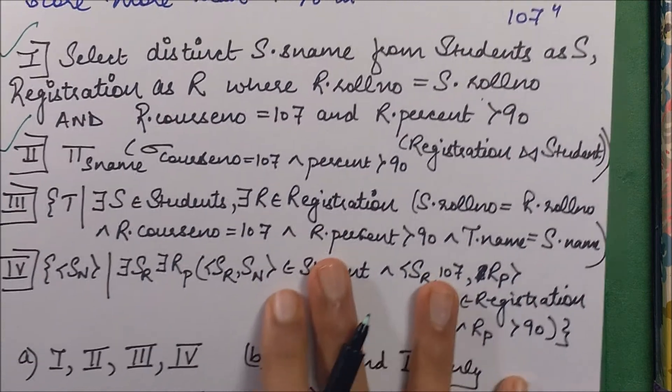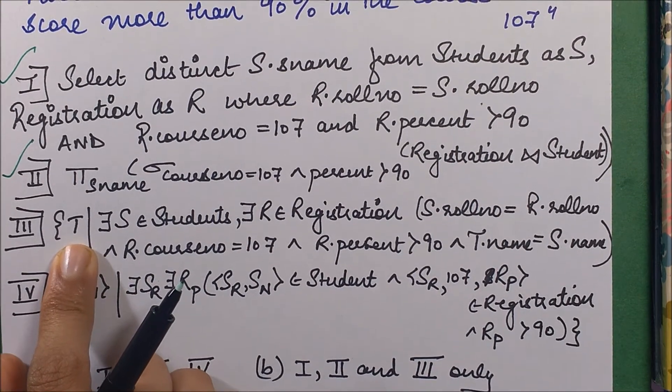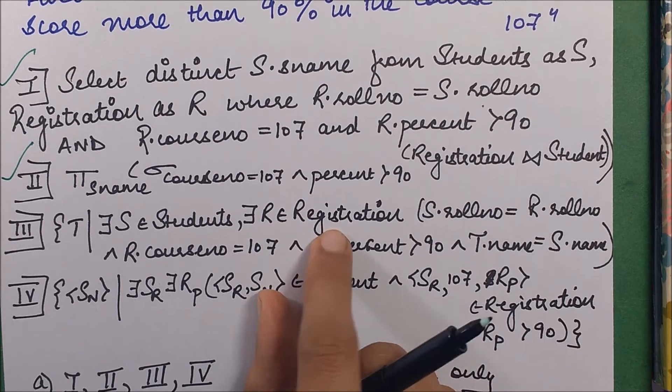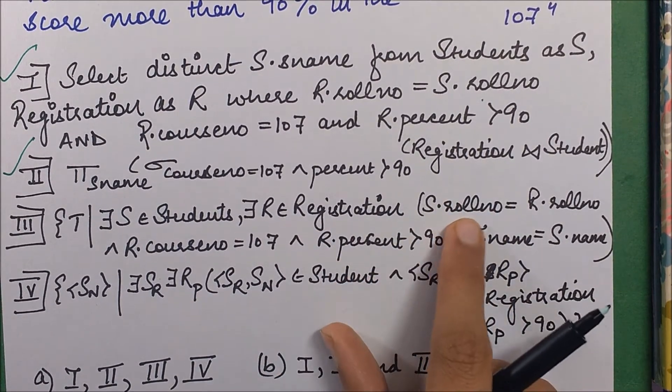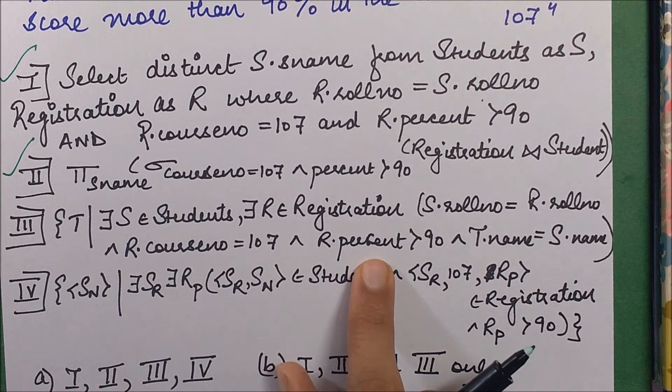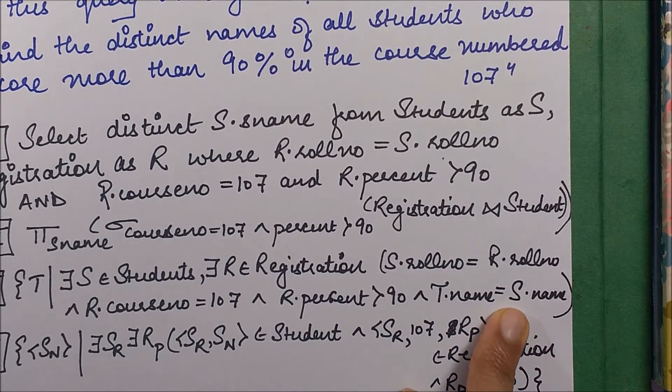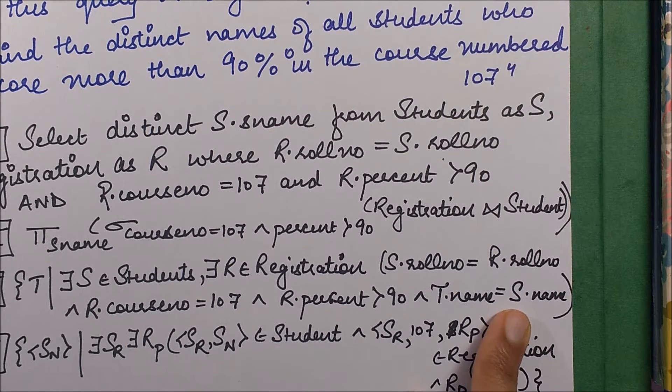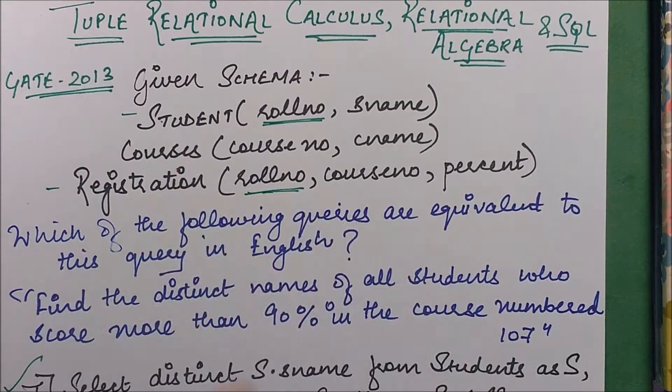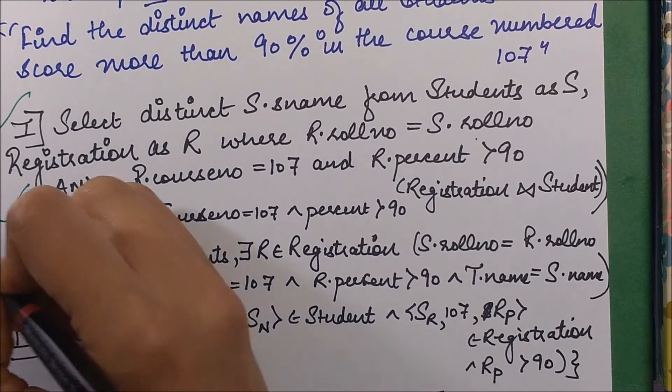The next one comes from tuple relational calculus. What does it say? Select those tuples wherein you have some students S belonging to Students, some registration satisfying this condition: for some students where S.rollno = R.rollno, you have course number is 107 and percentage is more than 90, and name in both tables T and S is equal. This means the name of the tuples equals the name in the students table, and you take those tuples out. This is also correct as per me.